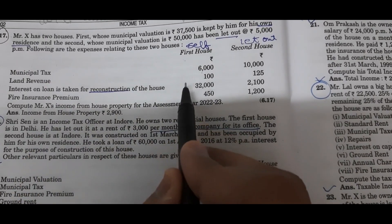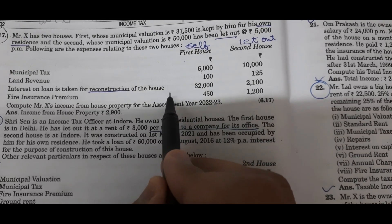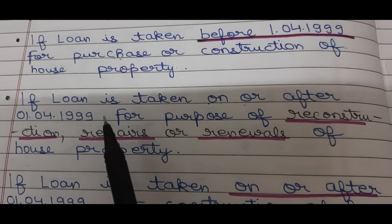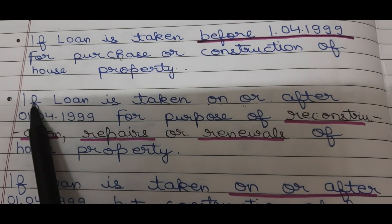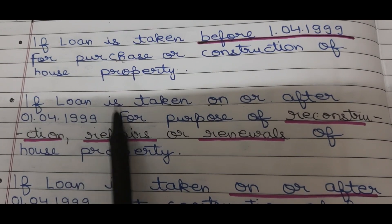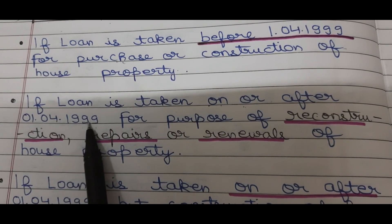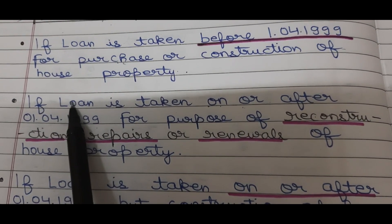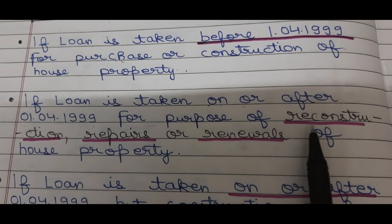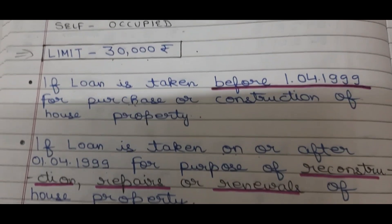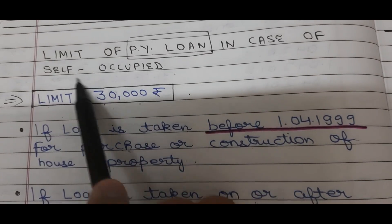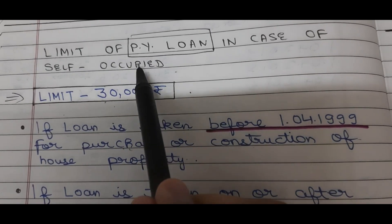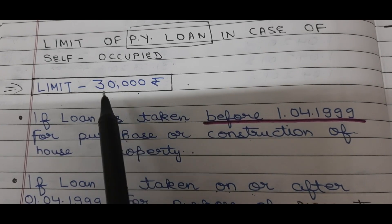Regarding interest on loan in a self-occupied case, there is a limit and it depends on the date. If a loan is taken on or after 1st April 1999 for the purpose of reconstruction, repairs, or renewals of house property, then the limit is Rs. 30,000 in the case of self-occupied. In the let-out case, there is no limit.